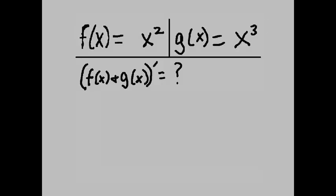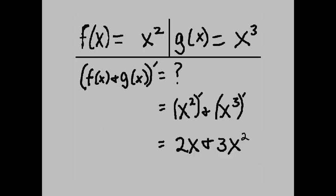Function composition — sum rule. f of x equals x squared, g of x equals x cubed. What does (f plus g) prime equal? It equals x squared prime plus x cubed prime, which equals 2x plus 3x squared.